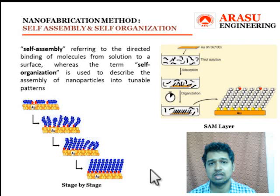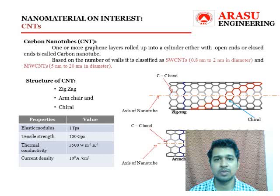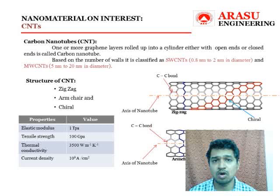With this we complete the fabrication techniques. In the next slide we will discuss the nanomaterial of our interest: carbon nanotubes. When one or more graphene layers are rolled up to form a cylinder — either with an open end or closed end — they are said to be carbon nanotubes.